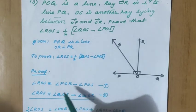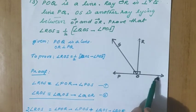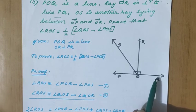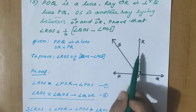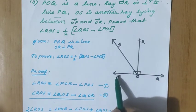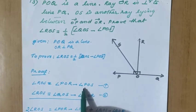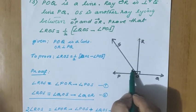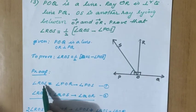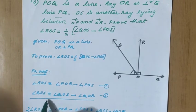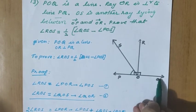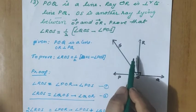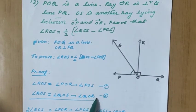Now for the proof: angle ROS can be written in terms of angle POR. From angle POR we subtract angle POS, and the remaining angle is ROS — that is the first equation. Similarly, ROS is calculated from the other side: from the whole angle QOS we subtract angle QOR, and again we get ROS. So we now have two equations.